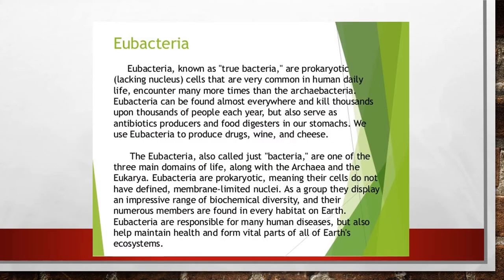Eubacteria is also called true bacteria. They are prokaryotic organisms, meaning they lack the cell nucleus. Compared with Archibacteria, Eubacteria can be found almost everywhere — they are omnipresent. They also serve as antibiotic producers as well as food digesters in our stomach. Eubacteria can be used to produce many drugs, wine, and milk products such as cheese.